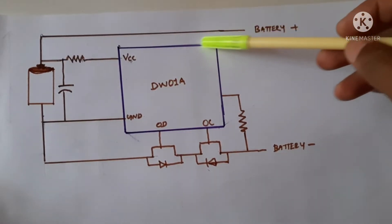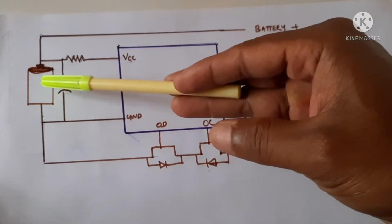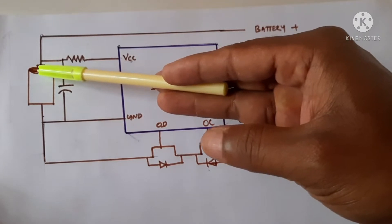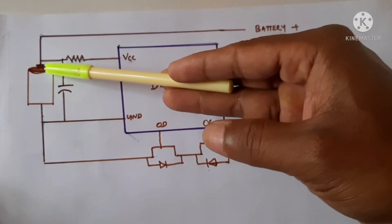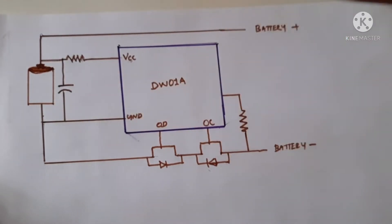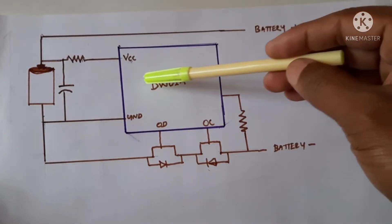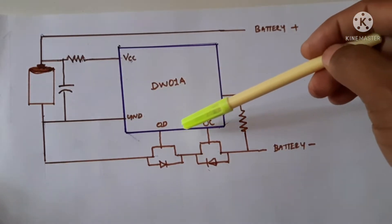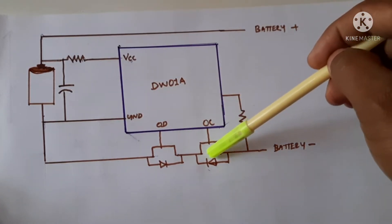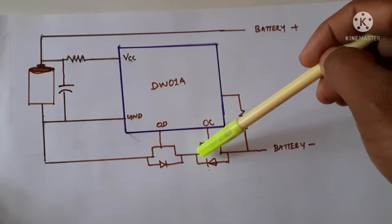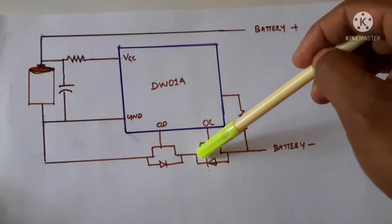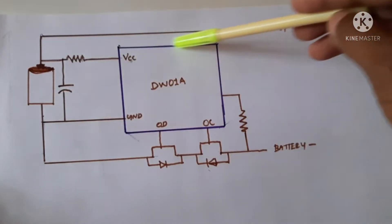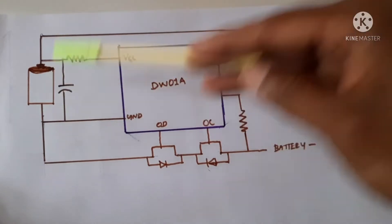First of all we look at the overcharging. The lithium-ion batteries maximum voltage is 4.2V. When the voltage reaches 4.2V this IC senses that the voltage is more than 4.2V and it will turn off the charging MOSFET. If the charging MOSFET is off this part is closed so there will not be any current flowing through this into the circuit.